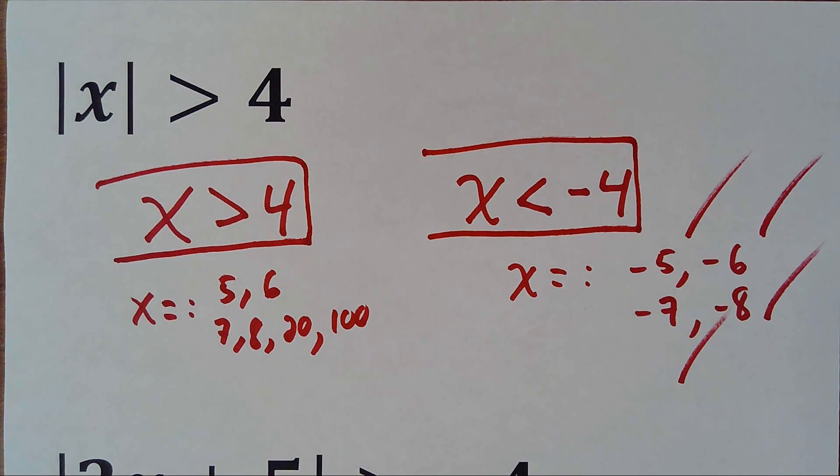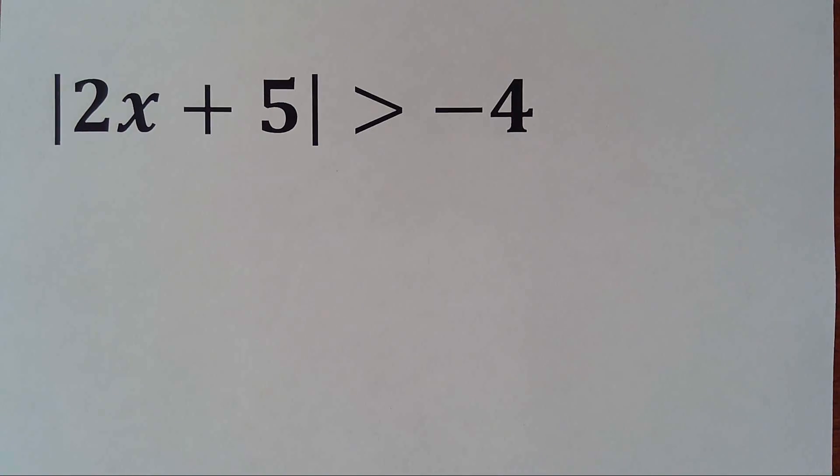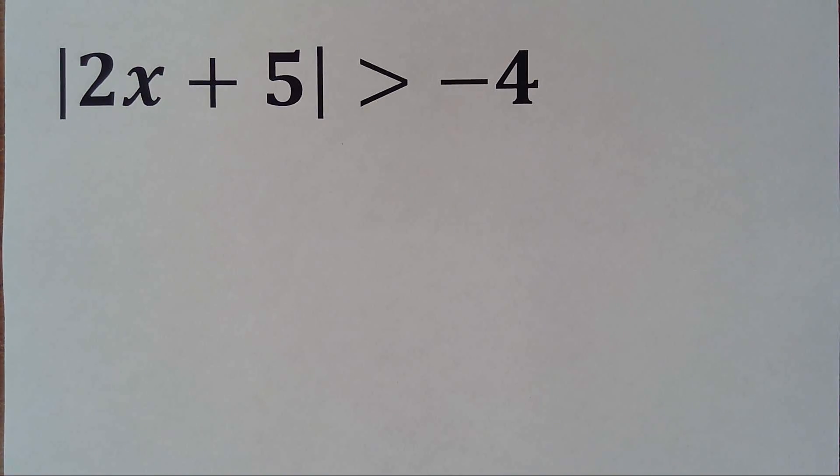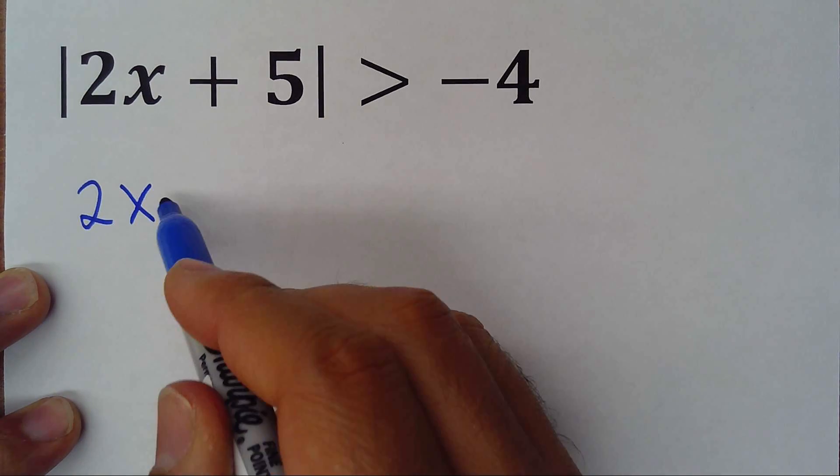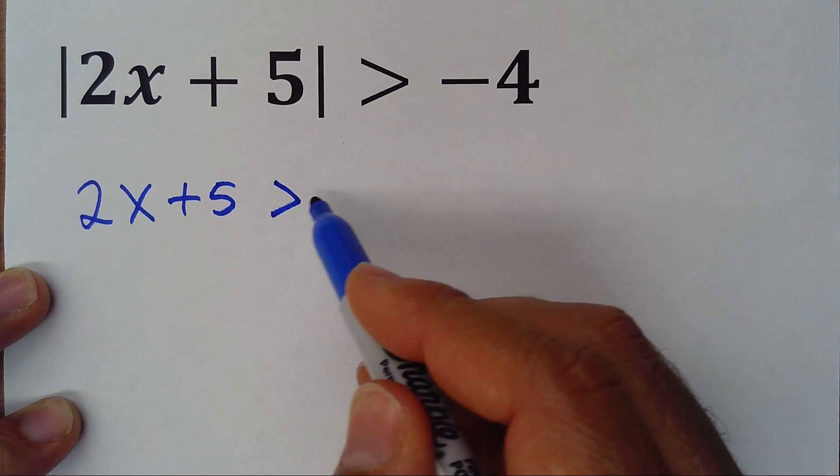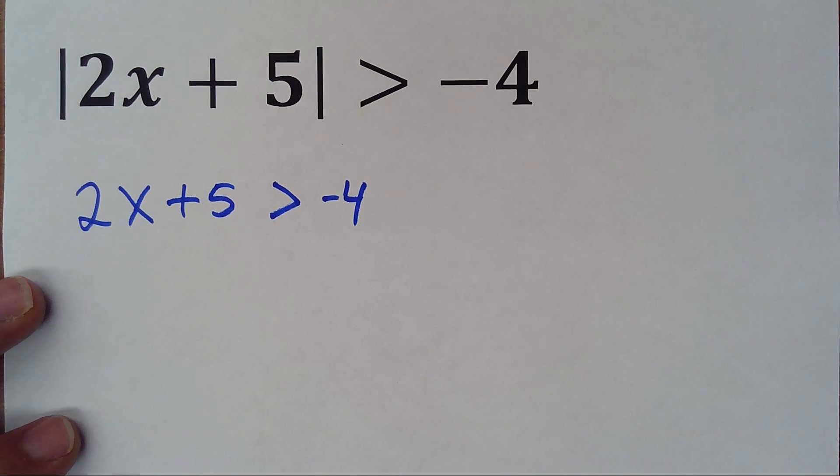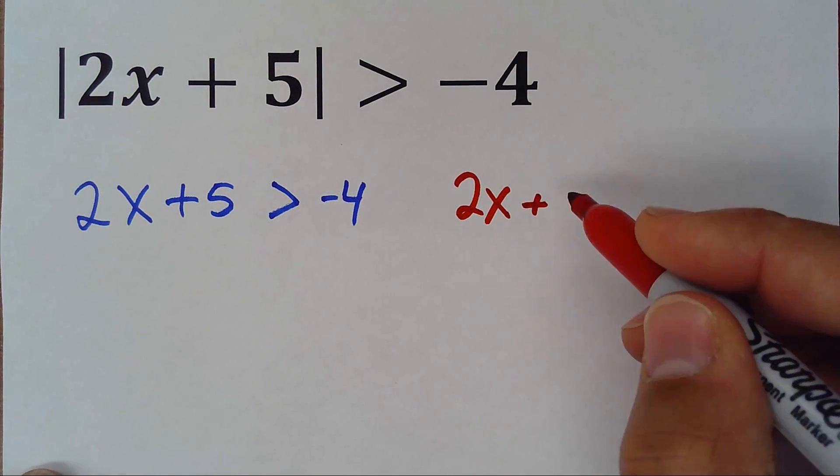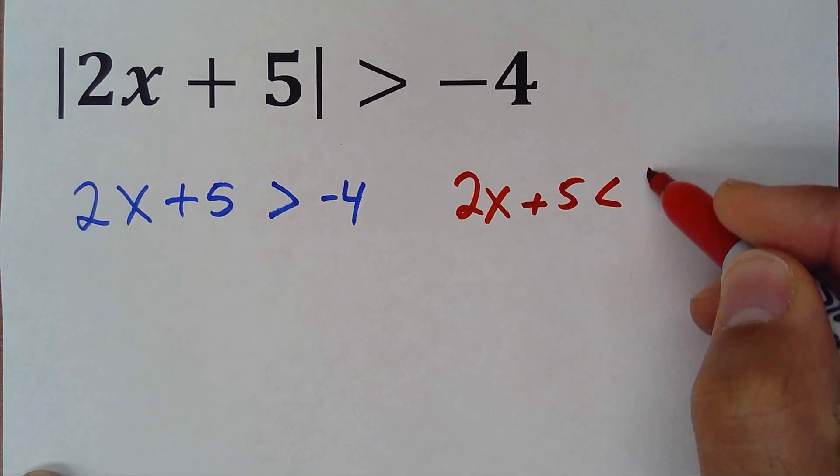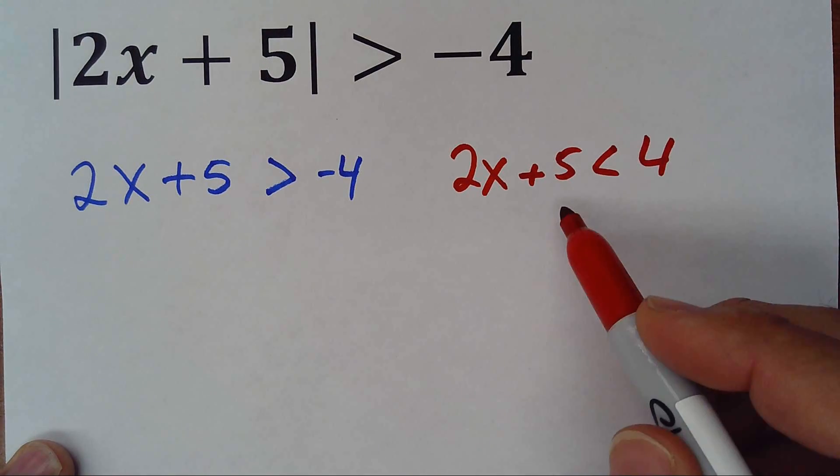So when we have a complex exercise, we have to write those two conditions. That's what we're going to do right now. So how do we solve that one? We do 2x plus 5 is greater than negative 4, but also we have to do 2x plus 5 less than negative 4.